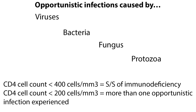AIDS-related infections are called opportunistic because the organisms causing infection are not ordinarily pathogenic to a healthy immune system. Opportunistic infections can be caused by viruses, bacteria, fungus, and even parasites. Patients with HIV or AIDS have severely compromised immune systems, so these organisms thrive, multiply, and produce disease.